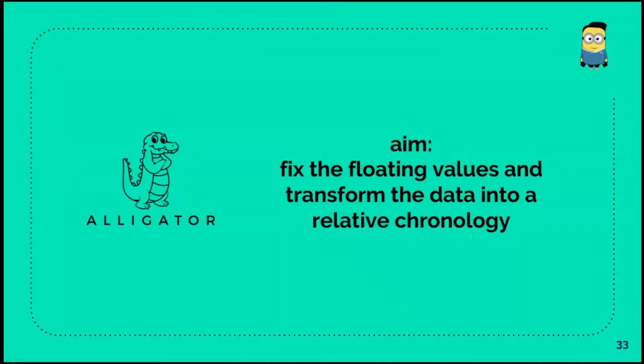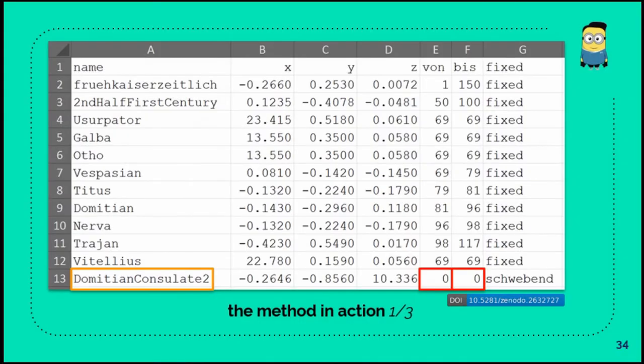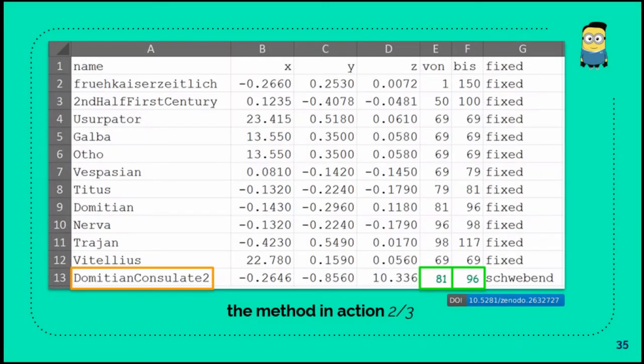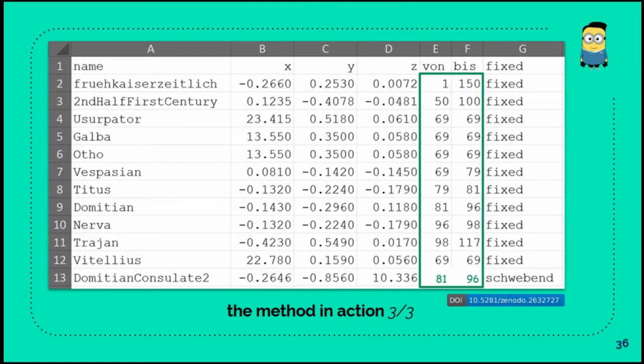Our aim is to fix this floating values and transform all the data into some kind of relative chronology coming from the CA. Let's concentrate on the two zeros in the red boxes at the bottom. After the tool, we just fix them and have some dates in it, and then we have a total list of from and to values to transform everything into a relative chronology.